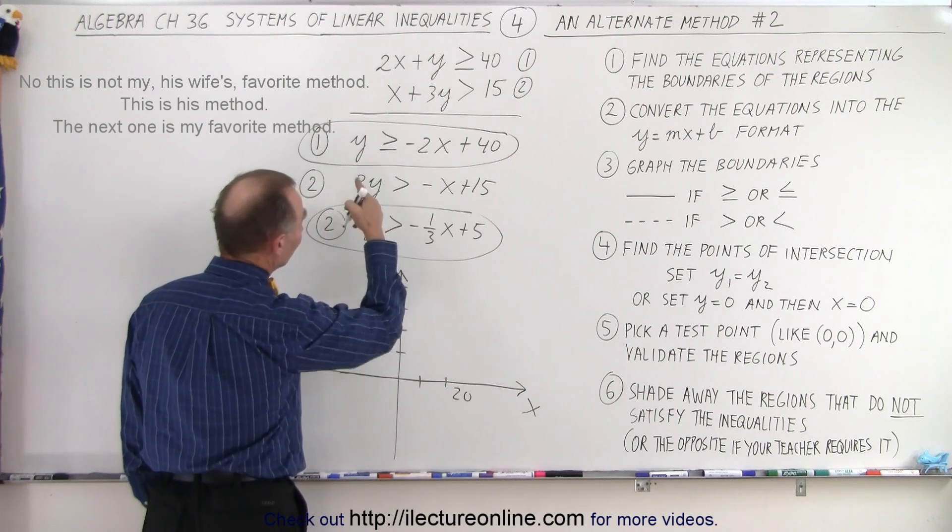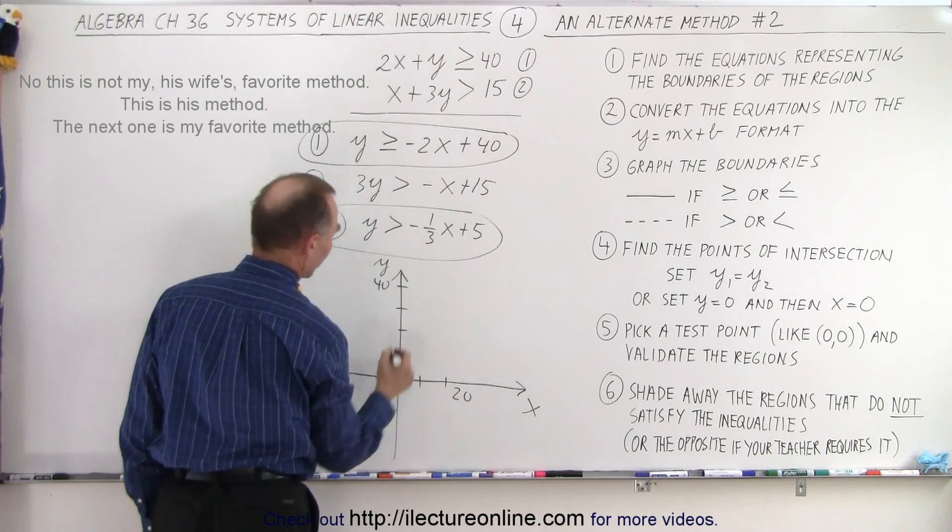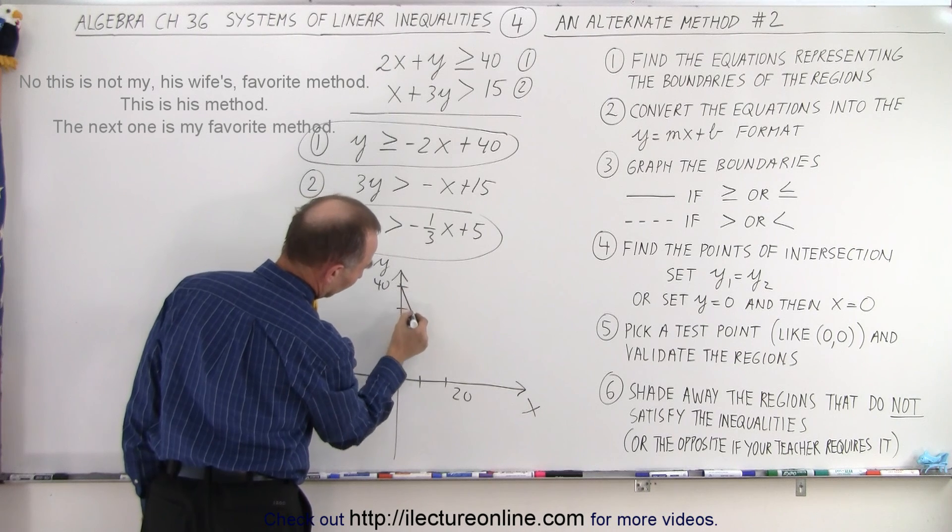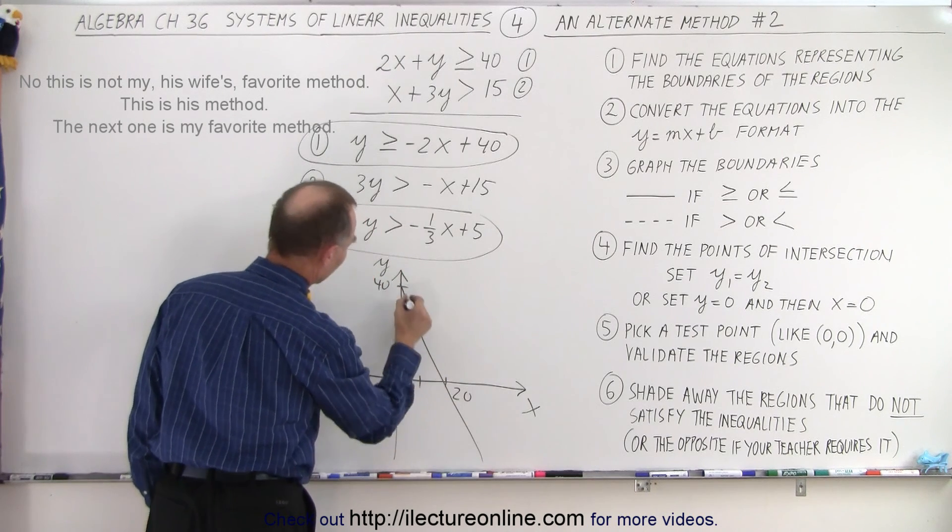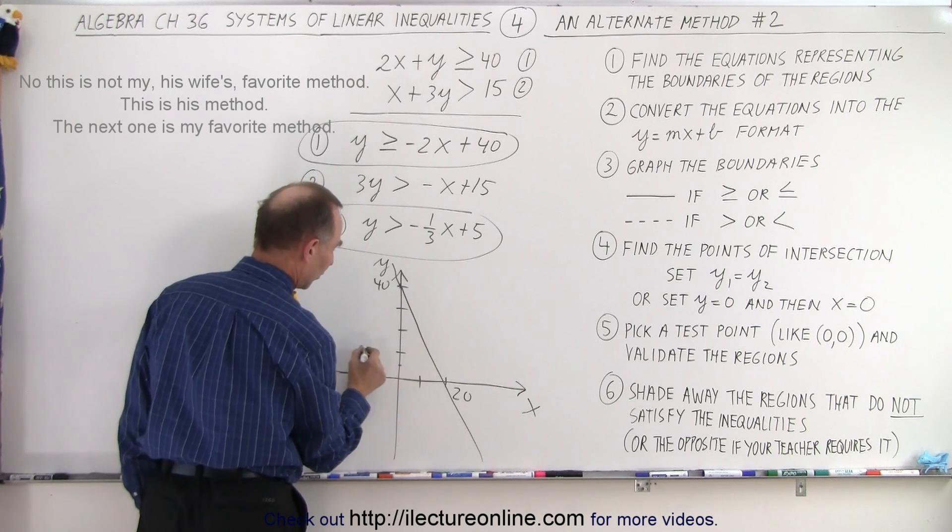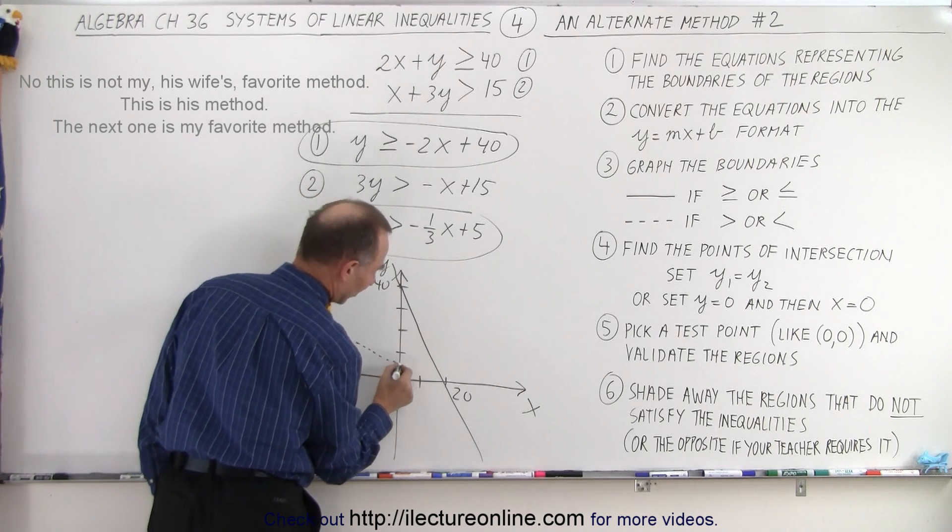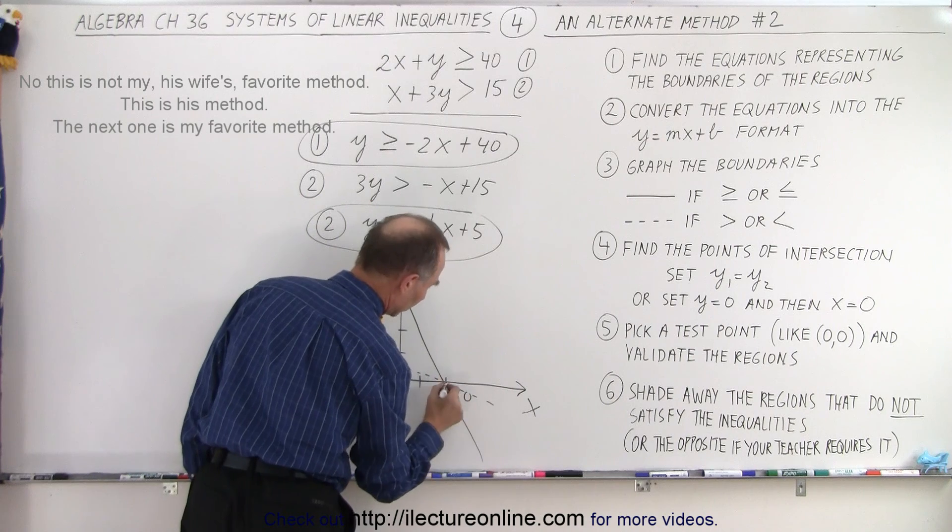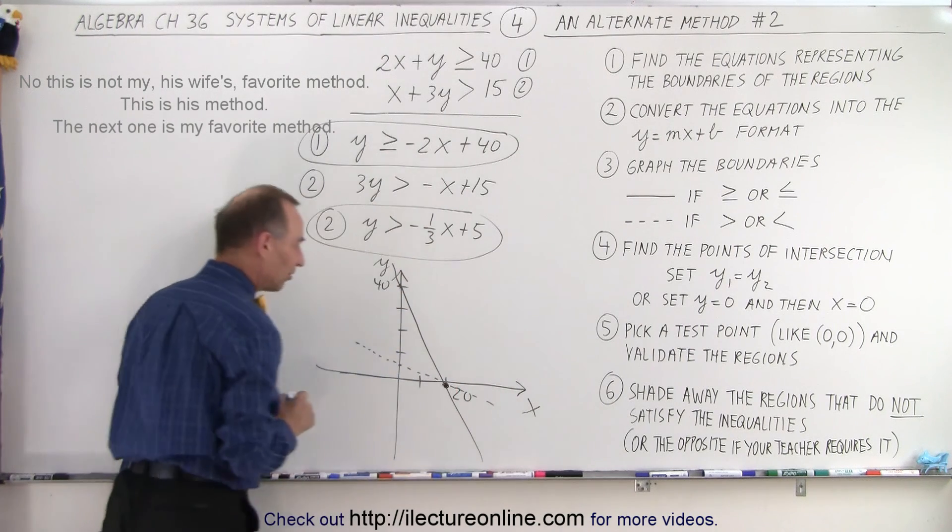And notice that the first line would have a slope of -2 and an intercept of 40. So that looks like it's going to be something that looks like this. And then the next line has an intercept of 5, -1/3. And that has to be a dashed line because it does not include. And that would be the point of intersection somewhere over there.